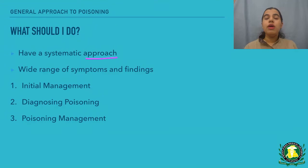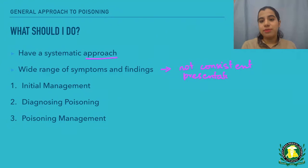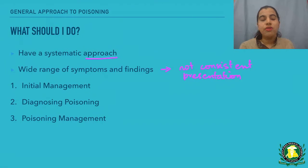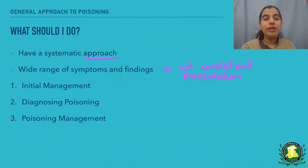What happens with poisons is that since there are so many types of poisons and toxicologies, the patients who present to you will not have consistent symptoms and findings. Sometimes you have patients that look completely fine and they are probably poisoned, and sometimes you have patients who are not looking fine and you'll be confused whether they are poisoned or whether something else is going on. So you need to have a high index of suspicion in these cases.